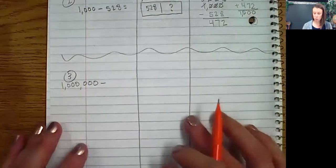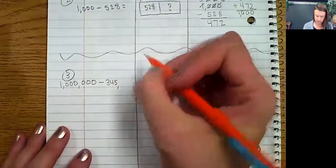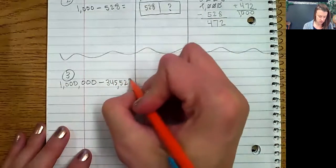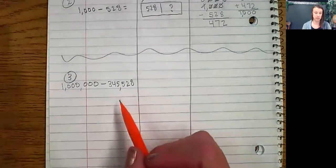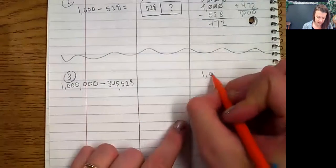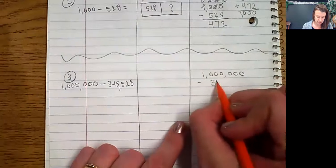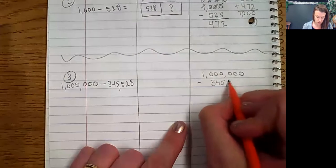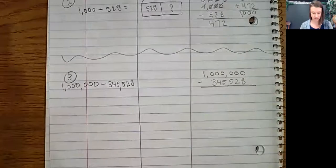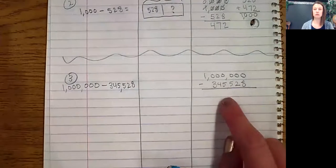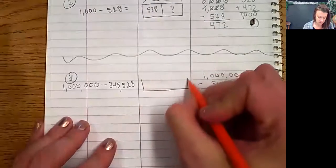Now we're going to look at 1,000,000 minus 345,528. If you're going to try to solve it horizontally, I would encourage you to take that extra moment to write it vertically — it doesn't take much time and you are much more likely to have the correct answer. This is the way to write it vertically to get all these numbers in the right place. So here we have our tape diagram — the total number would be 1,000,000.